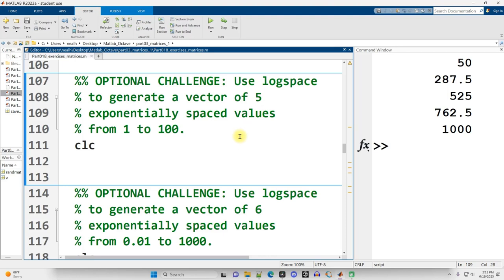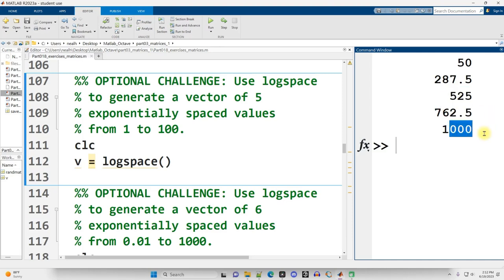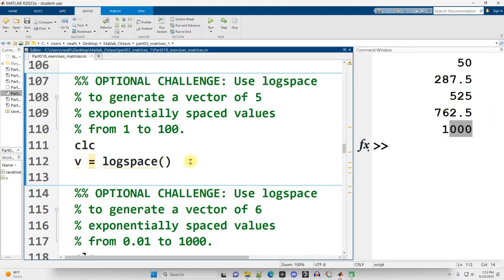Use logspace to generate a vector of five exponentially spaced values from 1 to 100. So logspace is a little bit different. It's somewhat similar to linspace, except instead of just we add the same amount each time to get the next value, we multiply the same amount to get the next value. And also, we don't put in 1, 100 for the starting values. We put in 10 to what power would be 1? Well, that would be 0. And 10 to what power would be 100? Well, that would be 2.